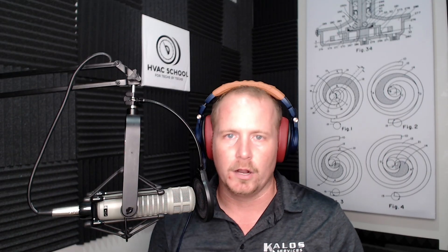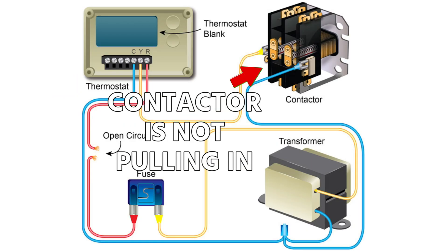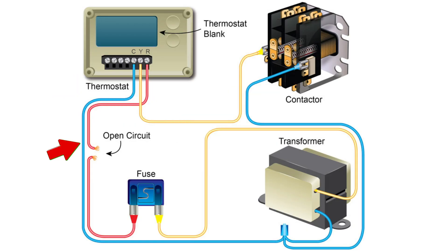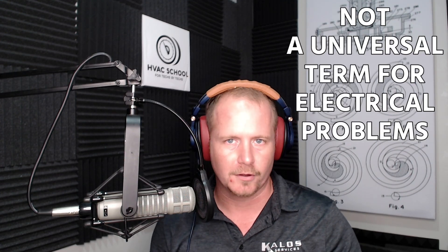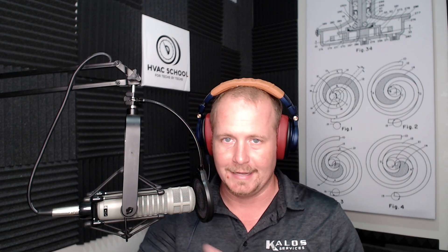So you walk up and the thermostat's calling for cooling, but the contactor is not pulling in — that's a case of an open circuit. Now, where it gets confusing is that a lot of people use the term 'short,' which is something totally different, as a universal term for electrical problems. It is not. A short is a specific problem.